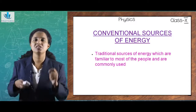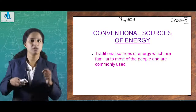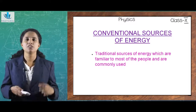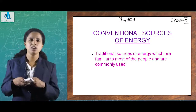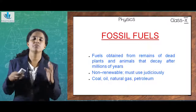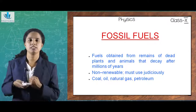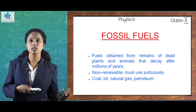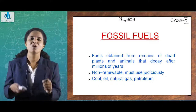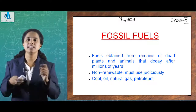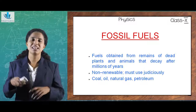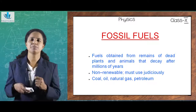Now we need to discuss conventional sources of energy. 'Conventional' means traditional sources that are familiar to most people and commonly used. The main example of conventional sources of energy is fossil fuels. As the word suggests, they are fuels obtained from fossils — the remains of dead plants and animals. We cannot extract these fossils as we wish; they need to decay, and after millions of years only can we extract different fossil fuels like coal, oil, natural gas, and petroleum.